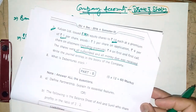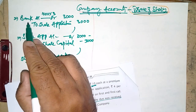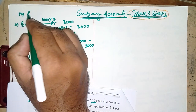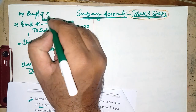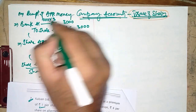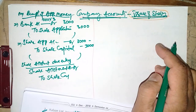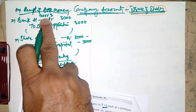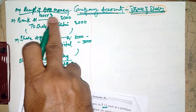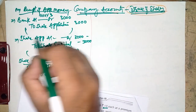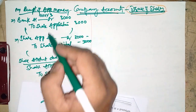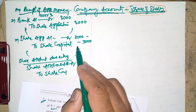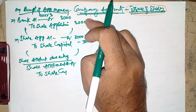The first journal entry is on receipt of application money: Bank Account Dr. to Share Application Account. We have issued 1000 shares on which we are collecting three rupees, so 1000 × 3 = ₹3000 received, being application money received. The second entry is the transfer of application money to share capital: Share Application Account Dr. to Share Capital — the same amount of ₹3000.